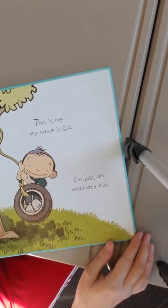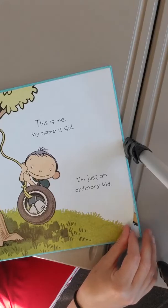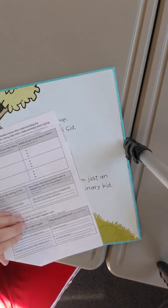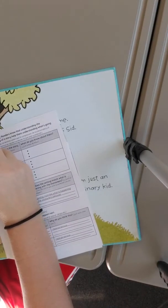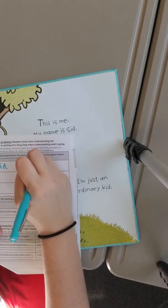This is me, my name is Sid. I'm just an ordinary kid. Oh, so I already know that this guy's name is Sid, so I'm gonna write here Sid. I also know he's an ordinary kid, so I'm gonna write that down.